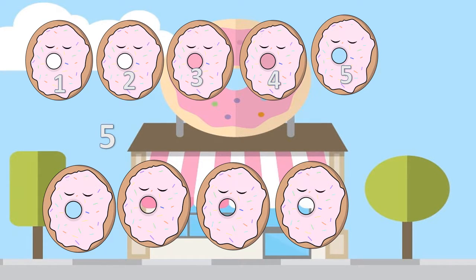She went to the donut shop and bought four more. Remember, we have five. Get it going. Five, six, seven, eight, nine. She has a total of nine donuts because five plus four equals nine.